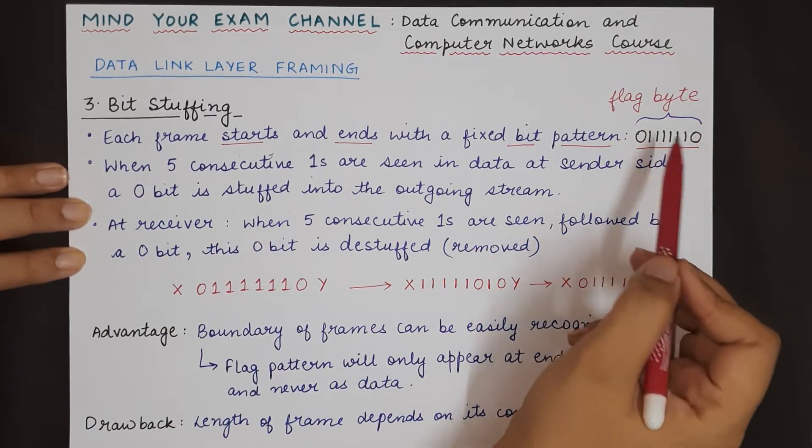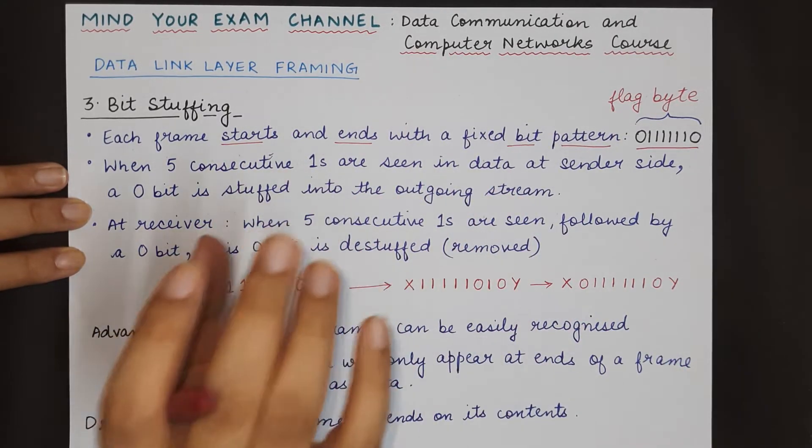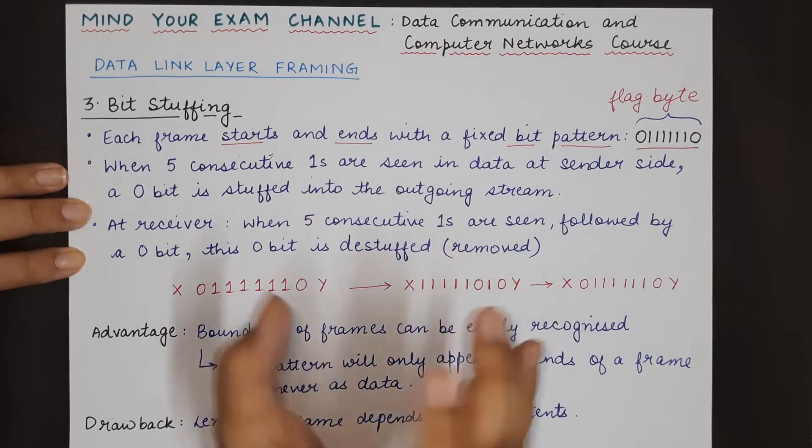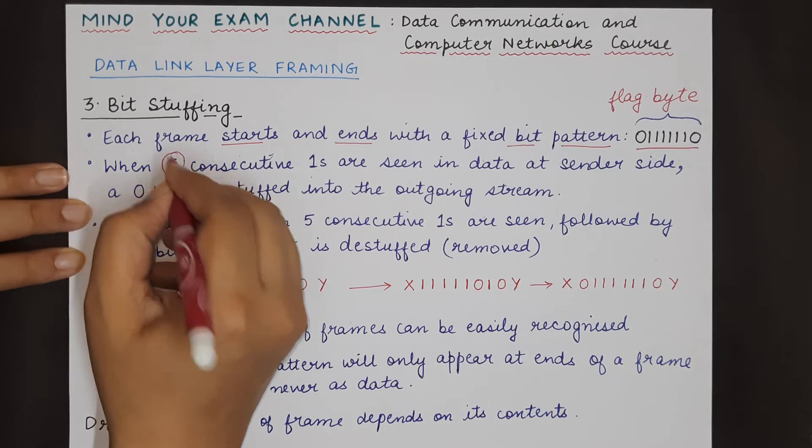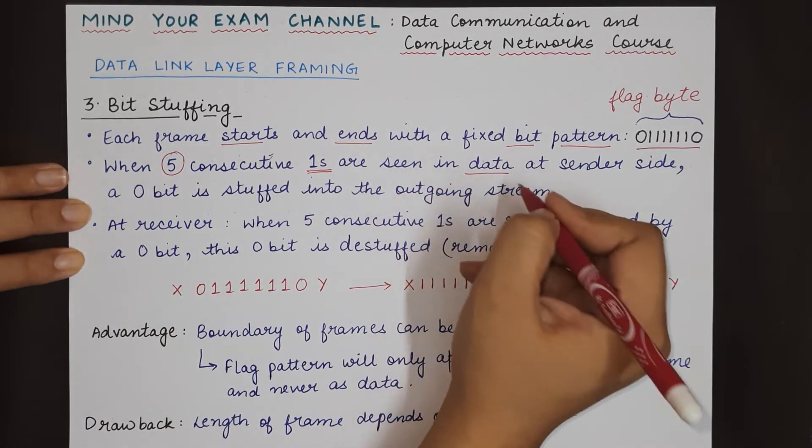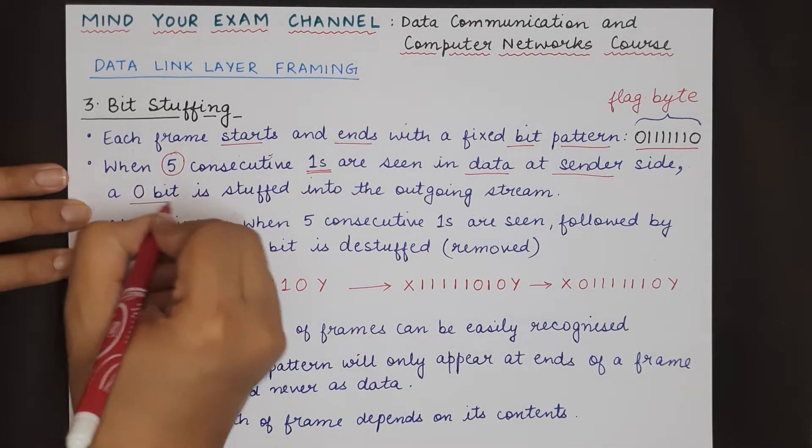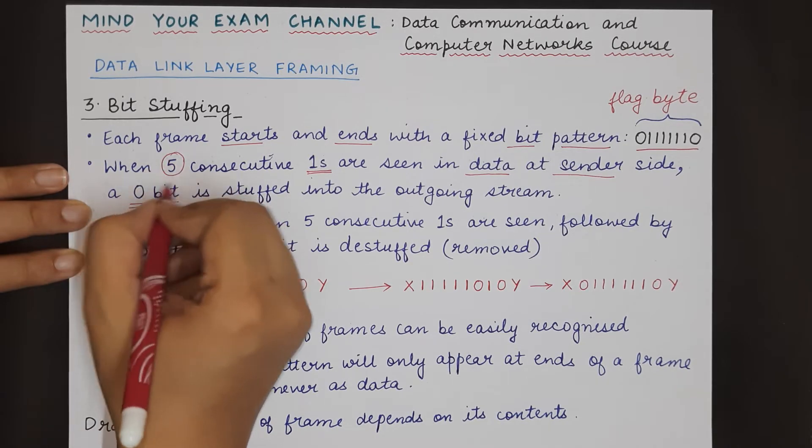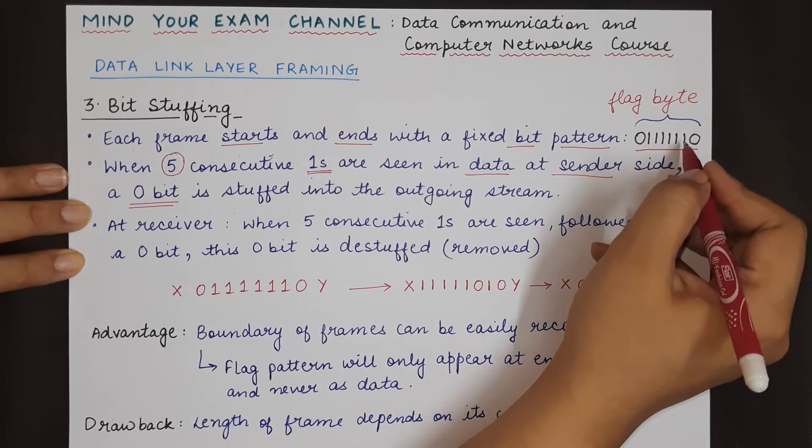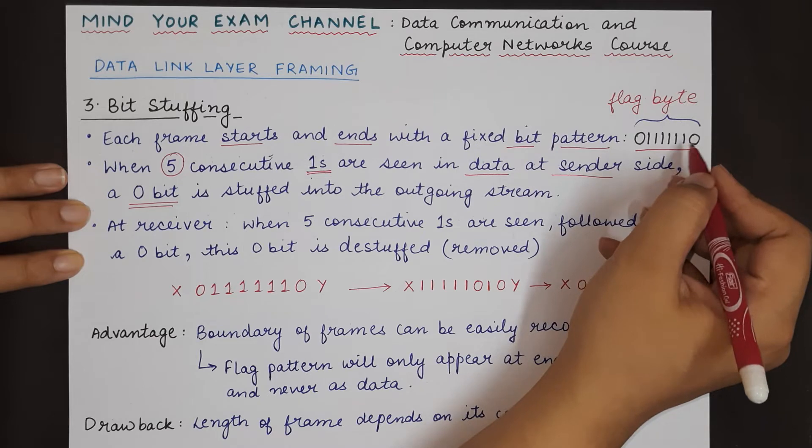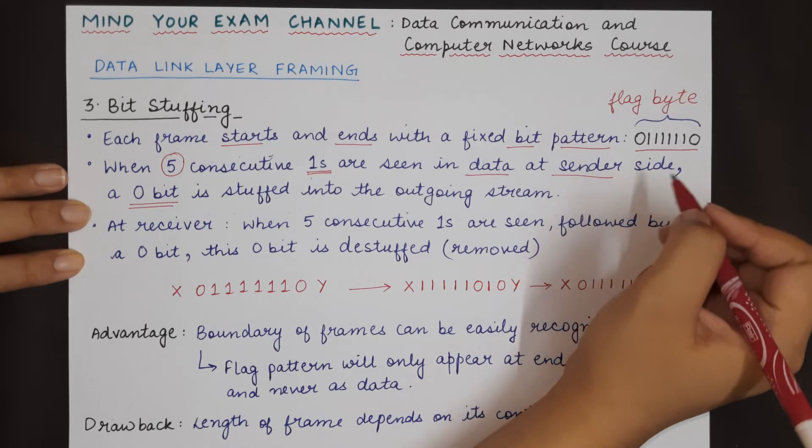If this particular flag byte appears in the data part of the frame, how to tell the receiver that this is not an ending or starting delimiter but rather data? Whenever five consecutive ones are seen together in data at the sender side, the data link layer inserts a zero just after the five consecutive ones. If another one is allowed to appear followed by a zero, it will look like a flag byte.